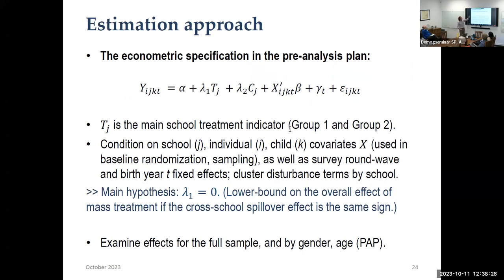We run a standard specification regressing outcomes — focused on child mortality — on the main treatment indicator variable Lambda-1. There's also the cost-sharing cross-cutting experiment Lambda-2. In previous work, the signs of Lambda-1 and Lambda-2 are almost always opposite, which makes sense: treatment means more deworming, cost-sharing means less deworming. We control for design factors and covariates involved in sampling, and include some time effects. We also pre-specified looking at things by gender and age as the key demographic dimensions of heterogeneity.